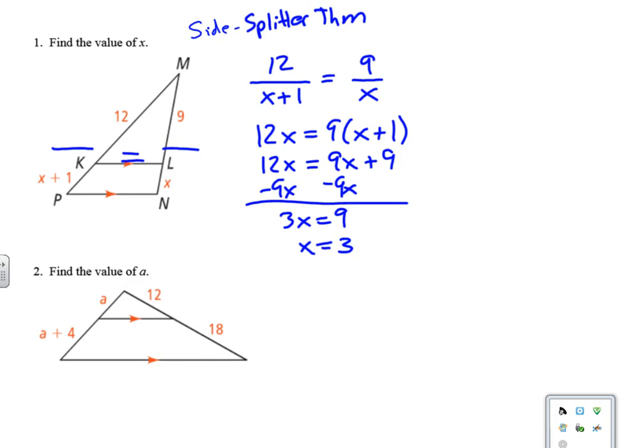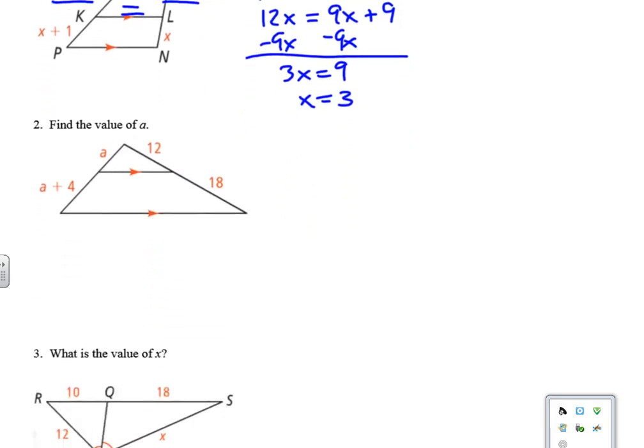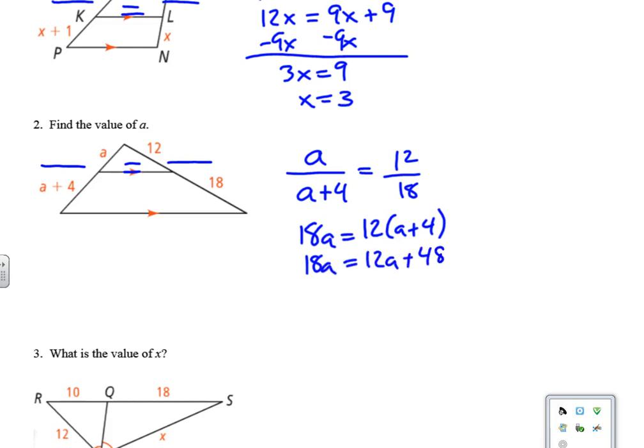Okay, so the next one is find the value of A, and here again this is the side splitter theorem. So here equals here. That's how I think about setting this up. So we have A over A plus 4 equals 12 over 18. So again, cross product property. It's the product of the means equals the product of the extremes. It's the cross product property. Alright, and then we subtract 12A, and so we get 6A equals 48, and then we divide by 6, and so 48 divided by 6 is 8. Alright, there you go.